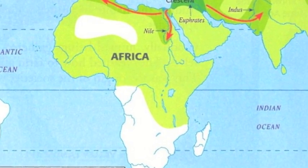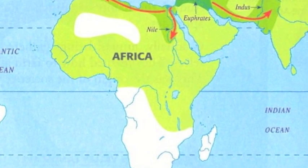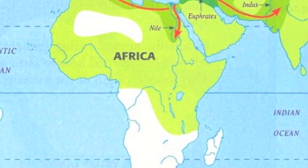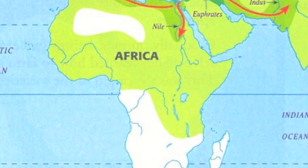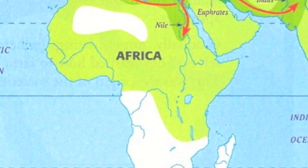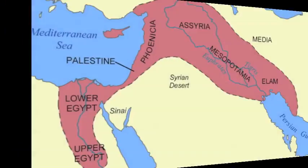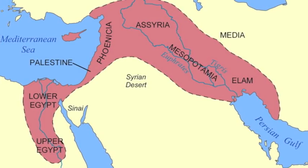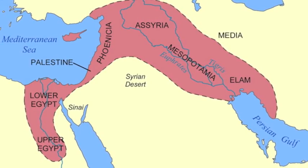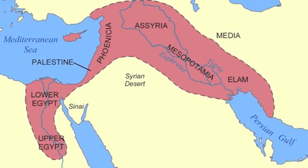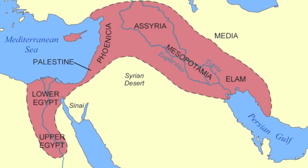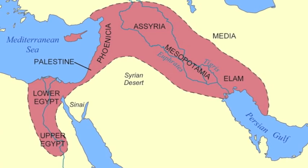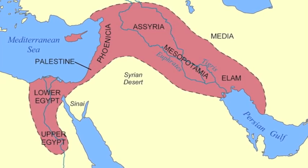The starting point for populating the earth began in Africa, around 2 million BC. The Fertile Crescent, which is today's modern Middle East, is where the Neolithic Revolution takes place.